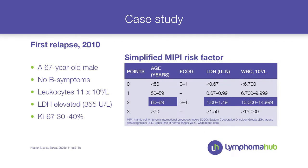Let's get back to our case: a 67-year-old male at first relapse. In 2010, he had no B symptoms, leukocytes were slightly elevated, LDH was significantly elevated at one and a half times the upper normal limit, and it was advanced-stage disease — typical for mantle cell lymphoma — with GI involvement and bone marrow involvement. Based on age, LDH, and leukocyte count, this is clearly a high-risk patient.